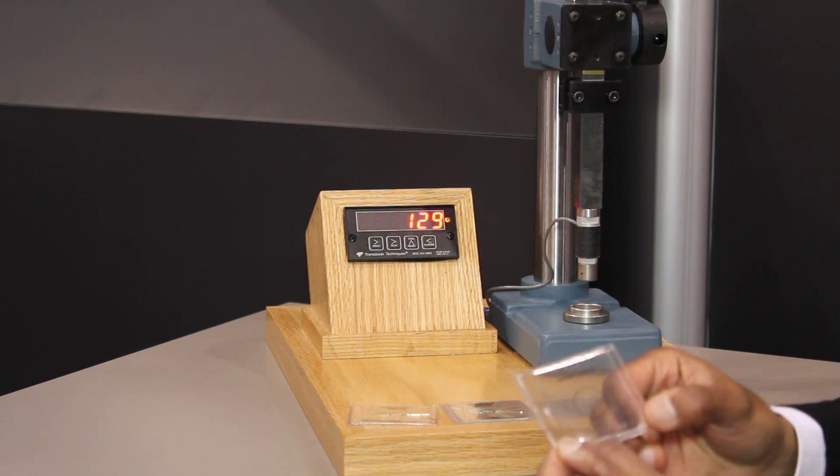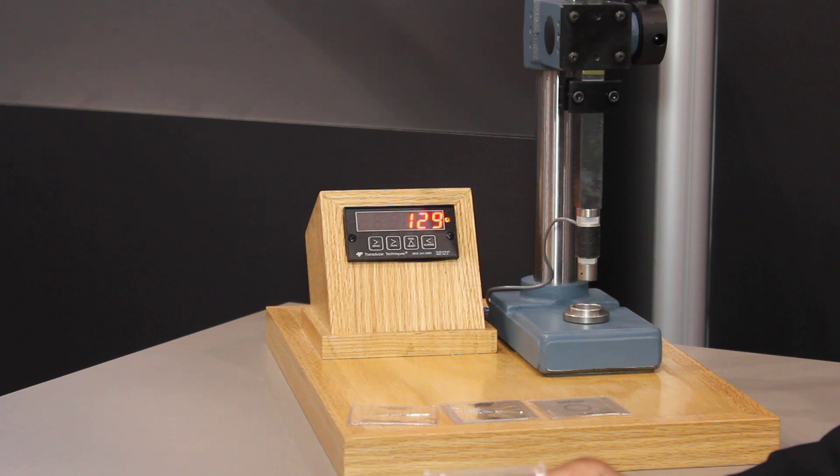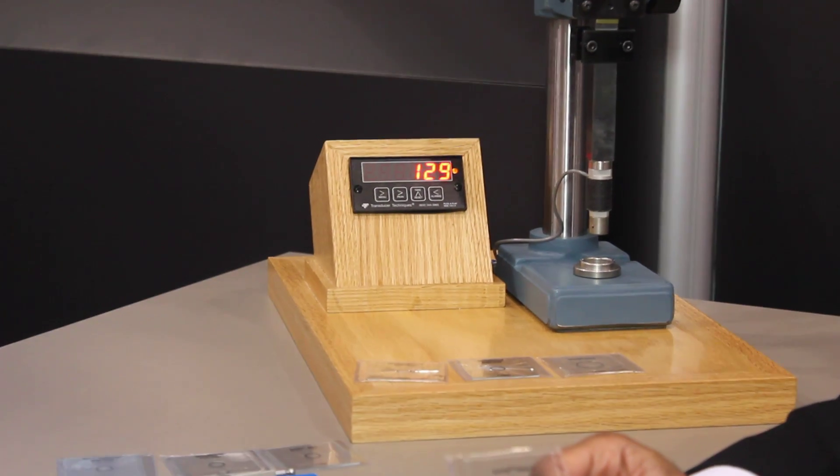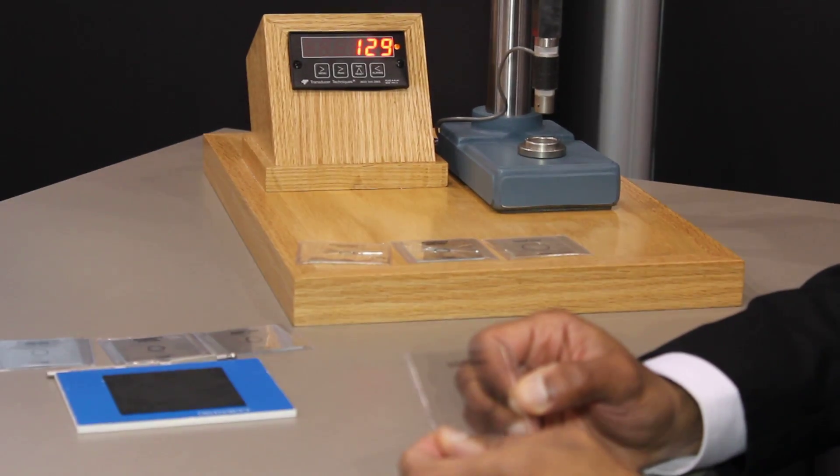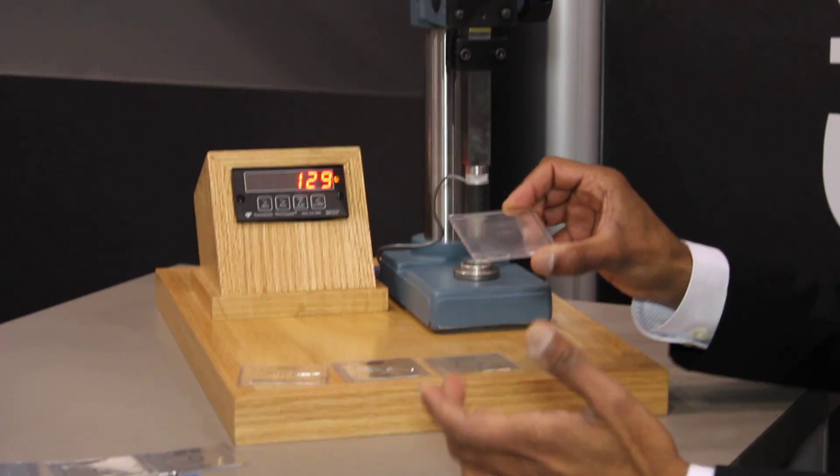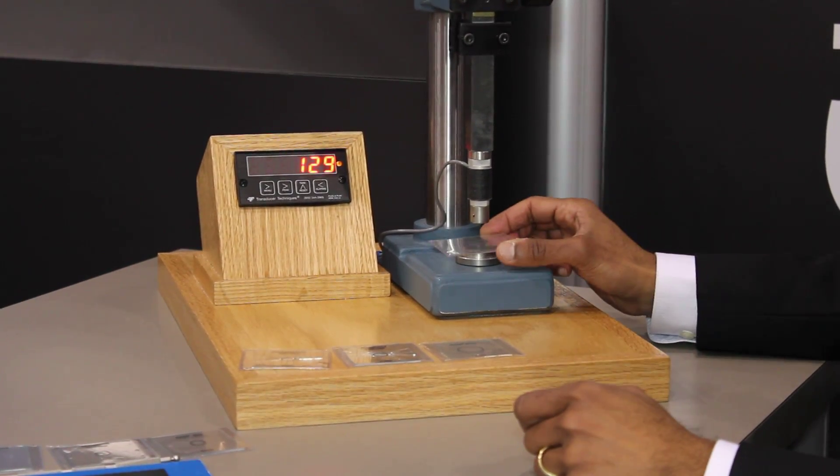We've now introduced Gorilla Glass 2. Gorilla Glass 2 has significantly higher damage resistance properties, and it allows you to go thinner than Gorilla Glass 1, which allows OEMs to make thinner products. This is 0.8mm. It's 20% thinner than the previous glass you saw.